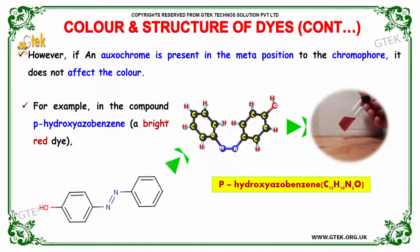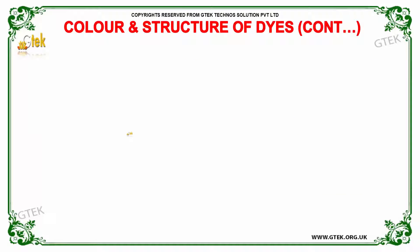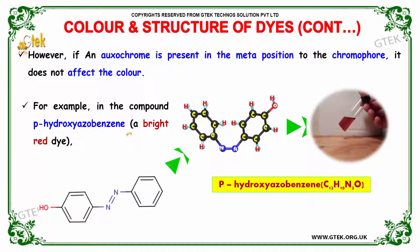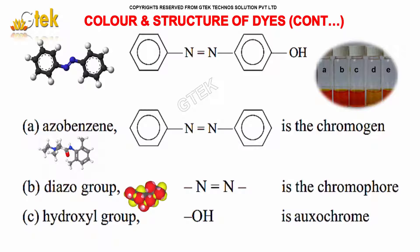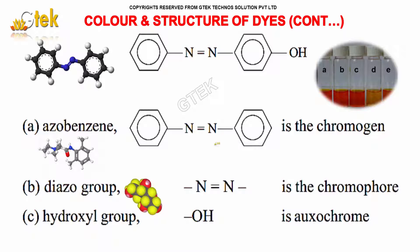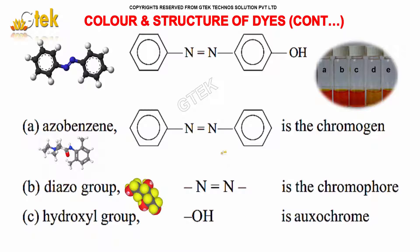For example, in the compound para-hydroxyazobenzene, this is the color and structure of dyes. This is the first product known as azobenzene. The next one is a diazo group present here. The third is a hydroxyl group which is an oxochrome. The other two are a chromophore and a chromogen respectively.